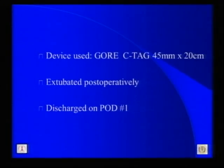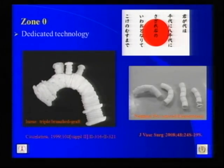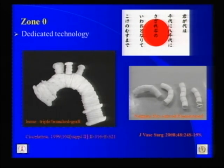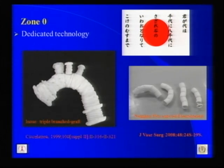We used a single device; the patient was extubated and discharged on day one. For Zone 0, there is dedicated technology available elsewhere in the world. Japan seems to be taking the lead on developing and utilizing it — including the Inoue triple branch graft described in Circulation 1999, and a recent update of the NAJUTA pre-curved fenestrated system presented at VEITHsymposium and published back in 2008.